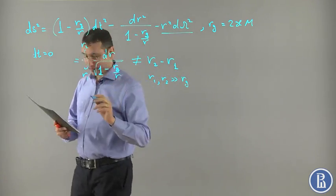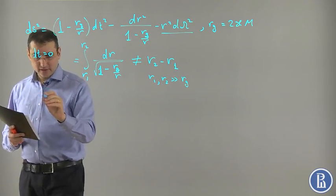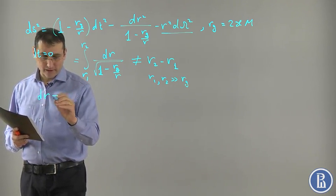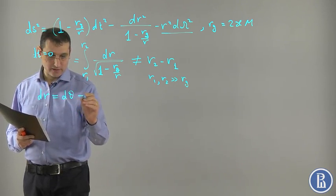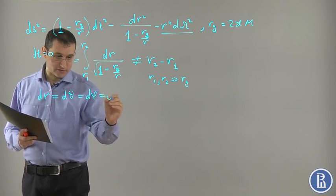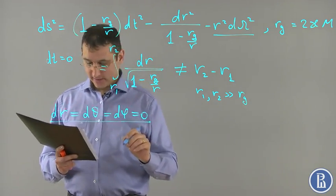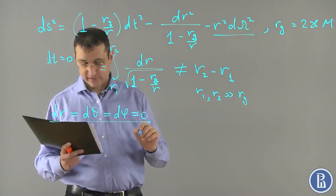And then, let us look at the observers. Consider someone who doesn't move in spatial directions. Consider dr, d phi equals zero. So, the static observers in this metric.